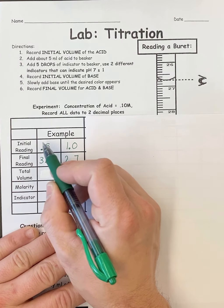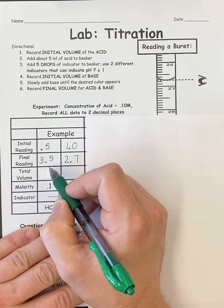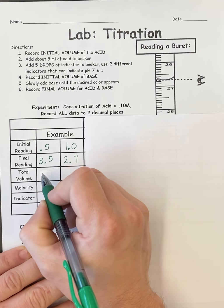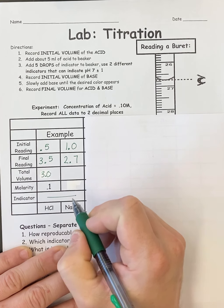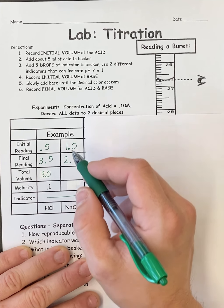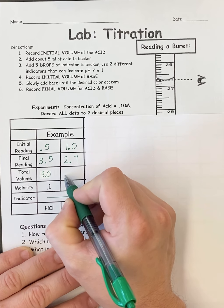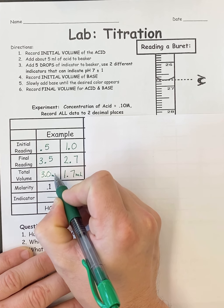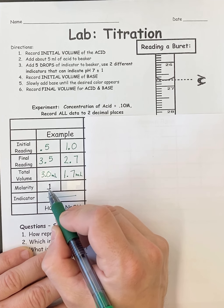So let's say my initial reading was 0.5 and my final reading was 3.5. So what this means is that out of the burette, I allowed 3.0 milliliters of acid to come out to neutralize the base. And now let's say these were my base readings, I would get 1.7 milliliters of base, which canceled out or neutralized my acid.